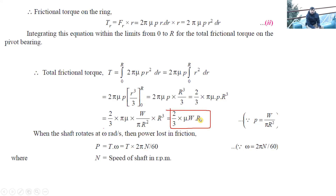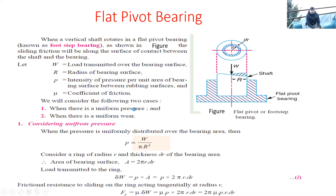Once we have the frictional torque T, we can determine the power lost due to friction using the formula P = 2πNT/60, where ω = 2πN/60. This equation was derived using the uniform pressure theory, and I hope this derivation is clear.